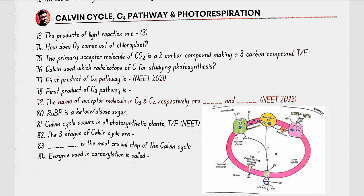The first product of the C4 pathway is oxaloacetic acid. The first product of the C3 pathway is PGA (3-phosphoglyceric acid). The acceptor molecule in C3 is RuBP and in C4 it is PEP. RuBP is a ketose sugar. Calvin cycle occurs in all photosynthetic plants. The three stages of Calvin cycle are carboxylation, reduction, and regeneration. Carboxylation is the most crucial step.